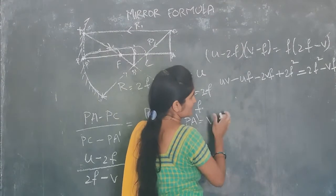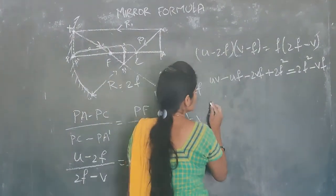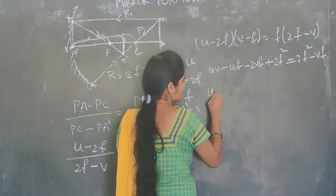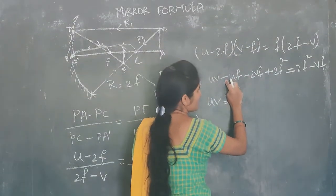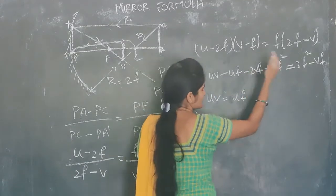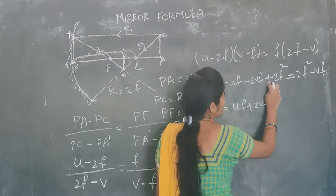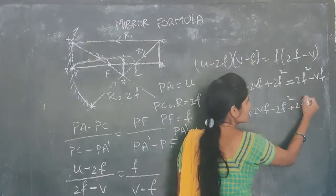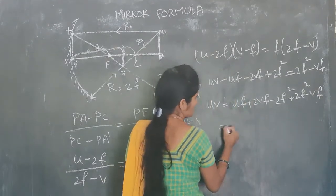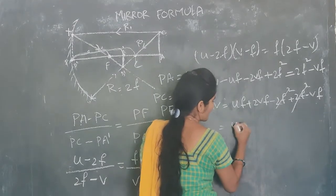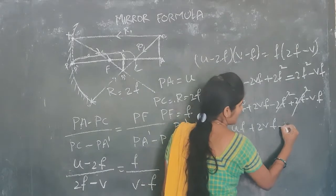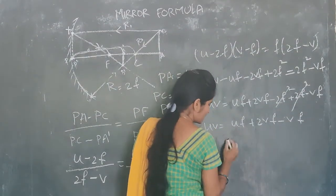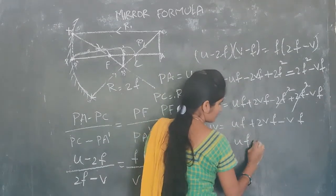Bringing all F terms to one side — only UV has no F factor. Moving terms: UV = UF + 2VF minus VF. Since 2VF minus VF = VF, we get UV = UF + VF.